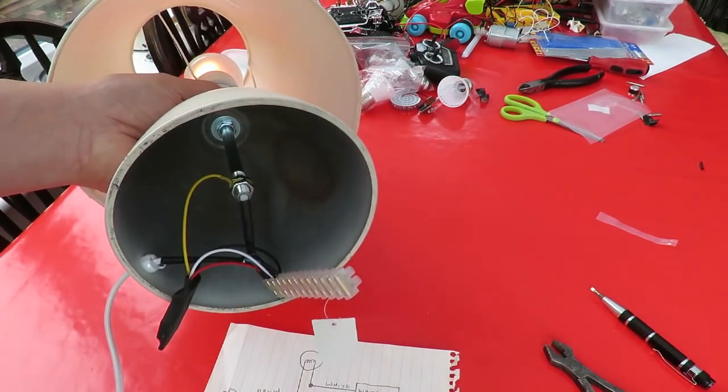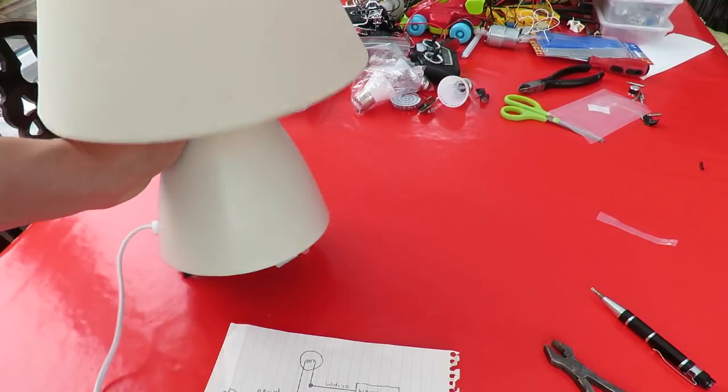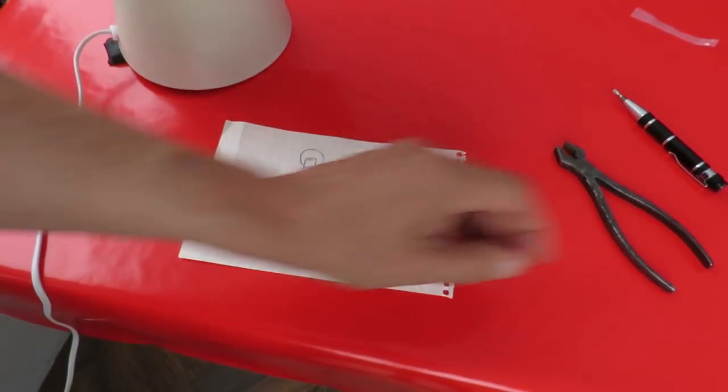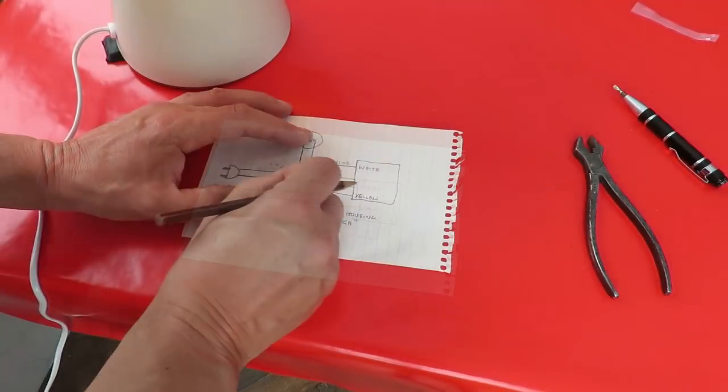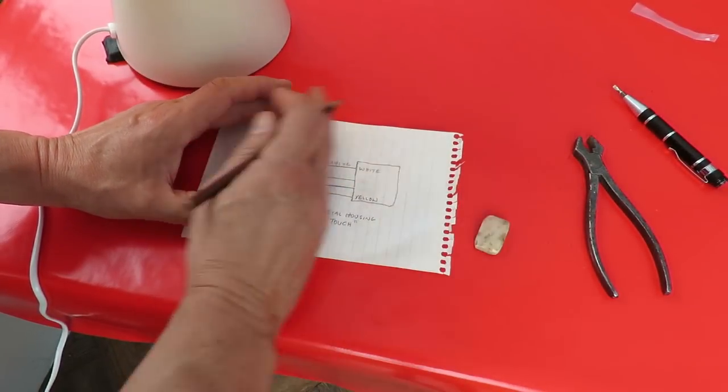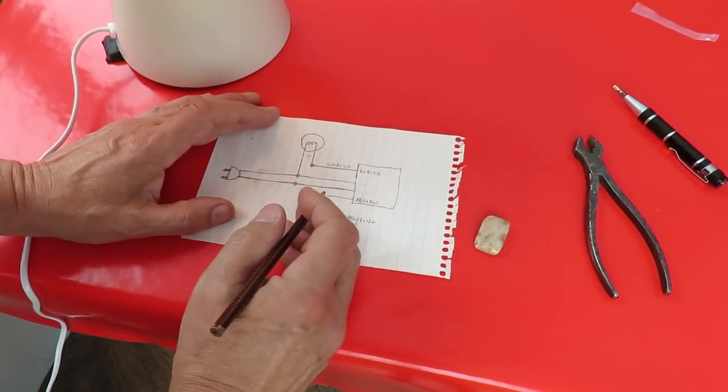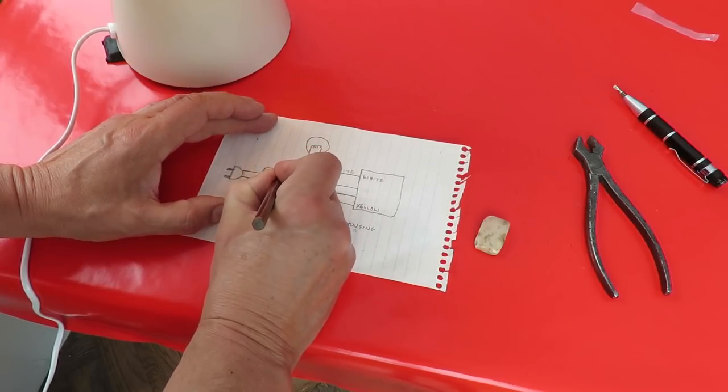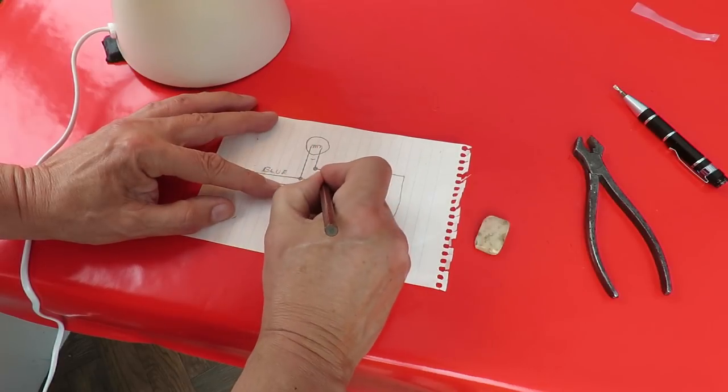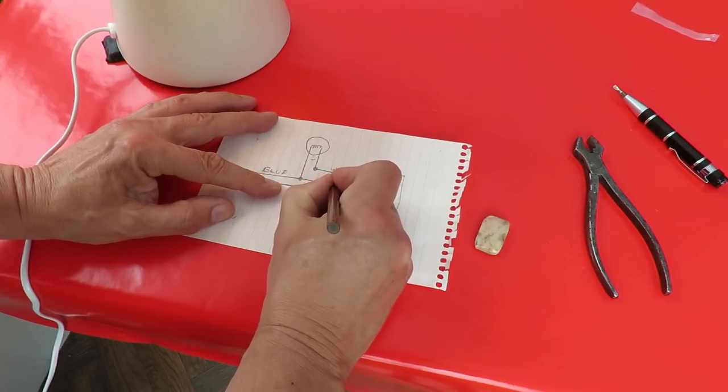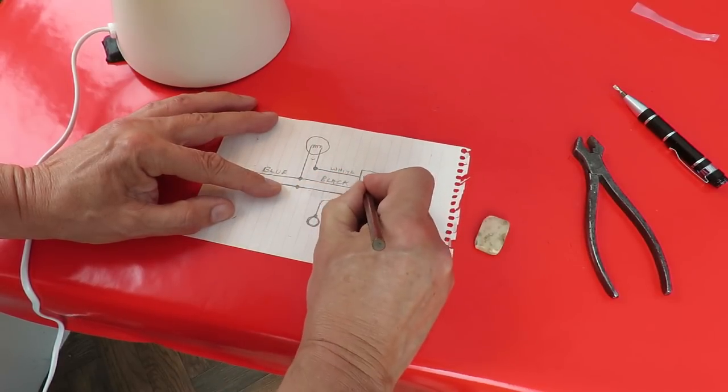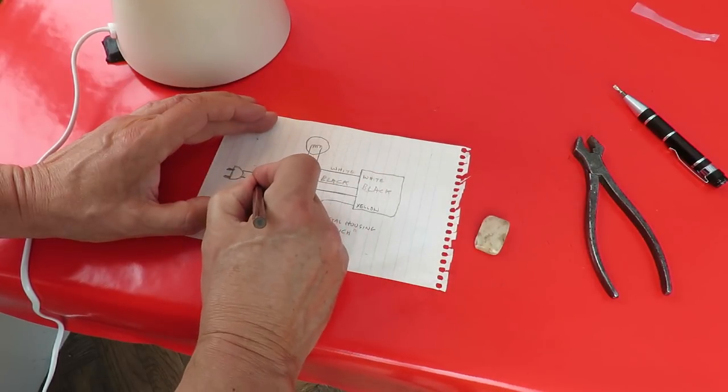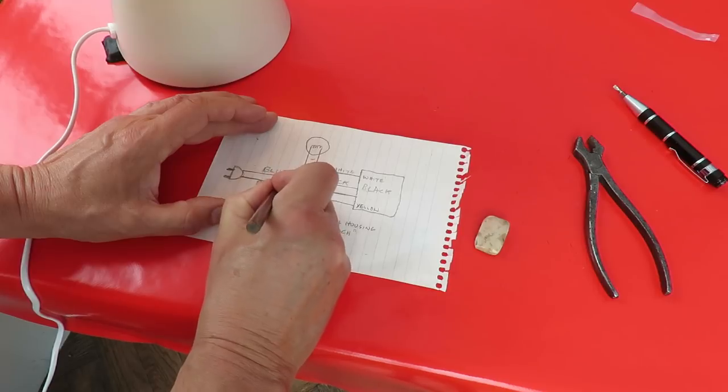So I'll redraw my diagram. So we're now blue coming in, black, black, brown is going to red. So that's the one that works with that particular module.